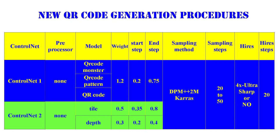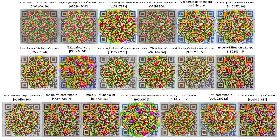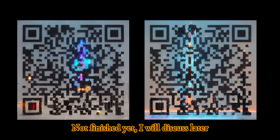Now, let's try another model for ControlNet 2. This time, I'm using the Depth model, which presents slightly more challenges compared to the Tile model. By decreasing the weight to 0.3, the resulting QR code appears very neat and beautiful. The Brightness and Illumination models can also influence the QR code image quality.